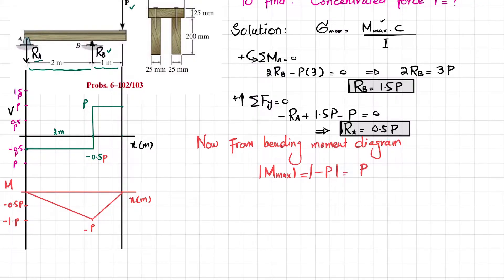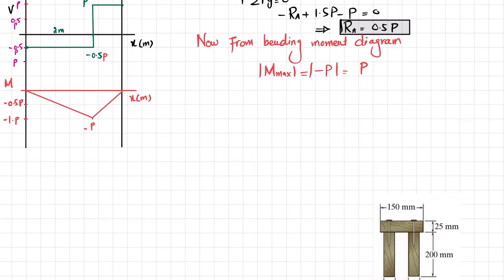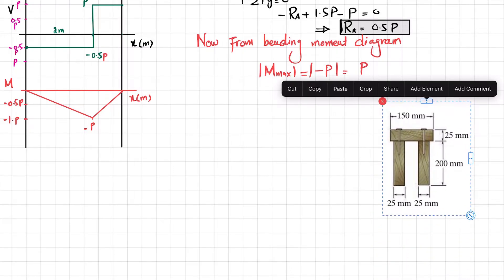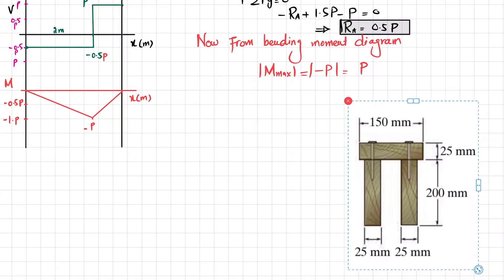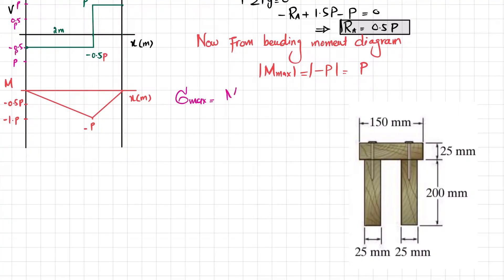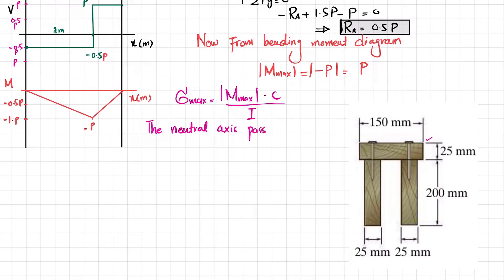From the bending moment diagram, the maximum absolute value of bending moment equals P. Now we have the maximum bending stress formula: maximum bending stress equals maximum bending moment times c divided by I. Since the cross-section is unsymmetrical, we do not know the centroidal axis, so we must first find the neutral axis, which passes through the centroid of the cross-section.